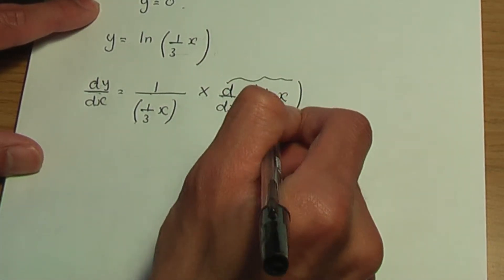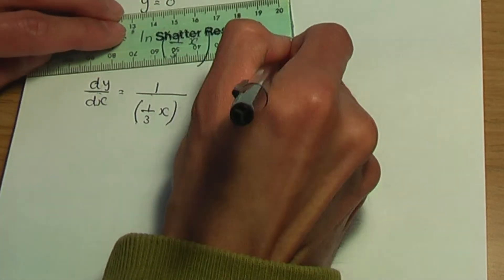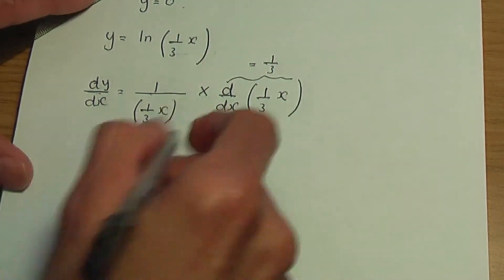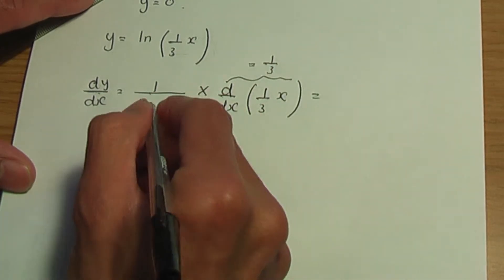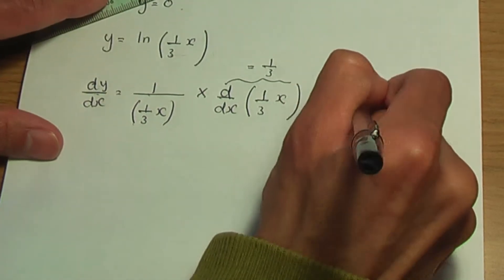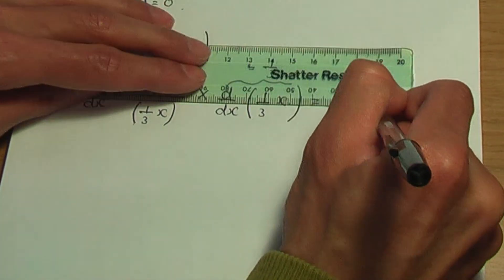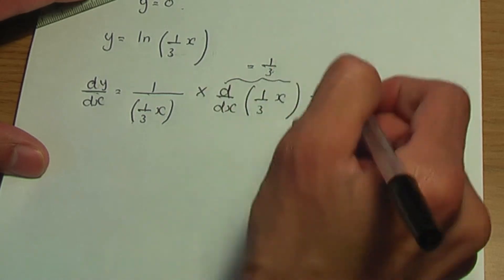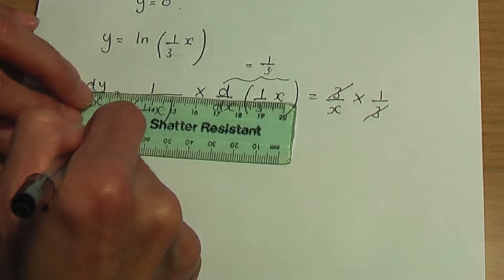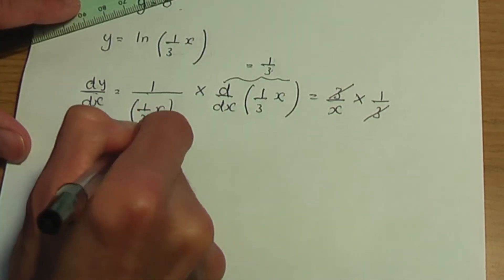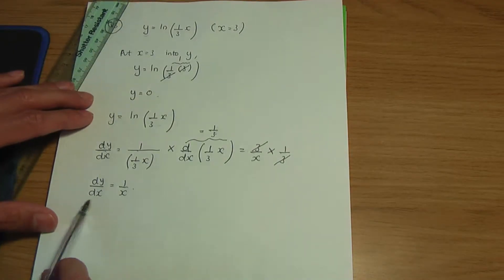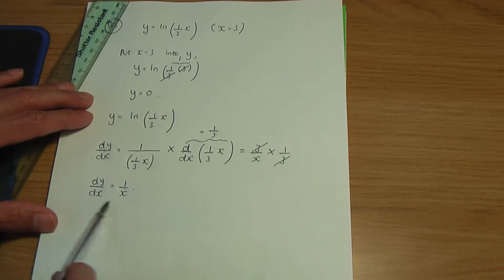The derivative d by dx of 1 over 3x is simply 1 over 3. So we get 1 divided by (1 over 3x), which is the same as 3 over x, multiplied by 1 over 3. I can then cancel the 3s, giving the gradient function dy over dx as 1 over x.